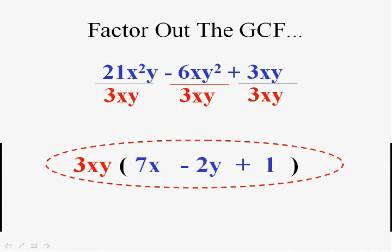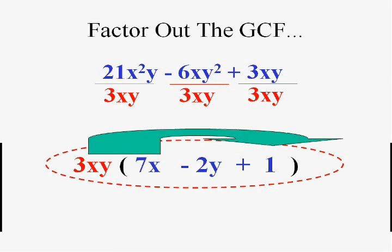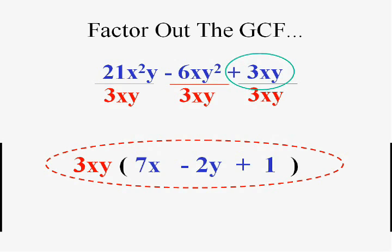Now, the nice thing about these problems is that you can check that it's correct by multiplying. 3xy times 7x better equal 21x squared y and it does. 3xy times minus 2y does in fact equal minus 6xy squared. And you can see, hopefully, why I have to have that 1. 3xy times 1 does equal 3xy. So I have the correct answer.